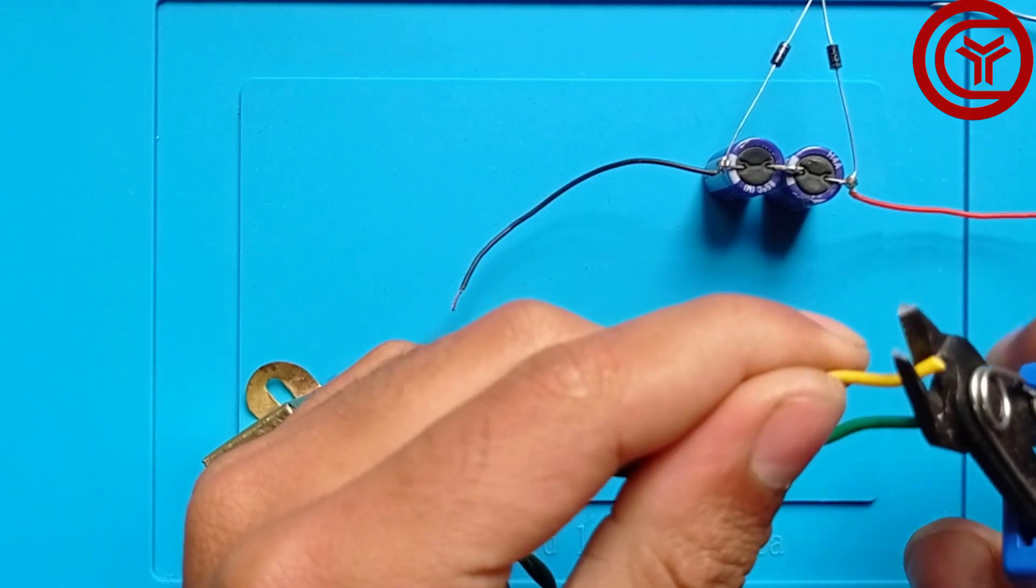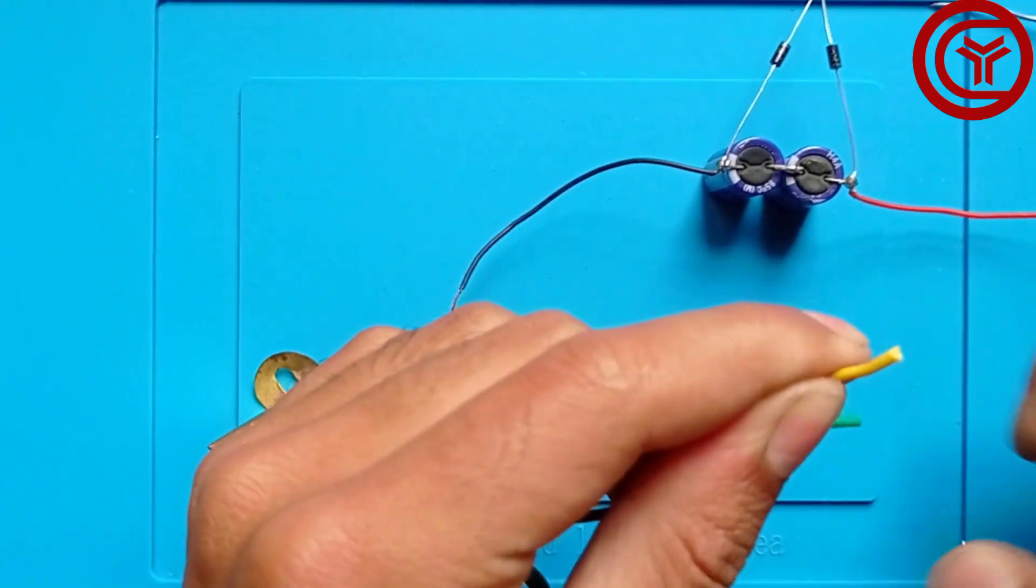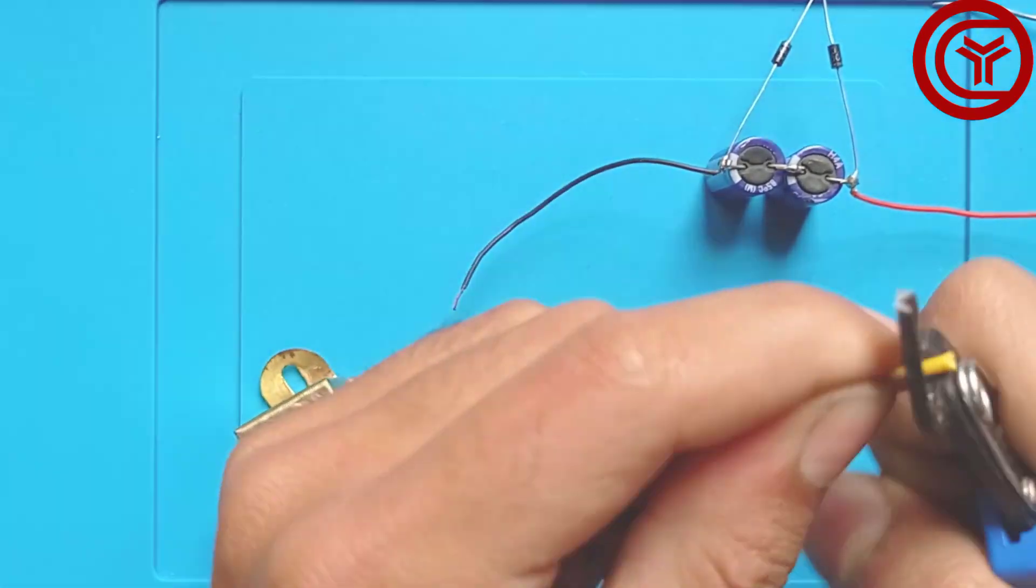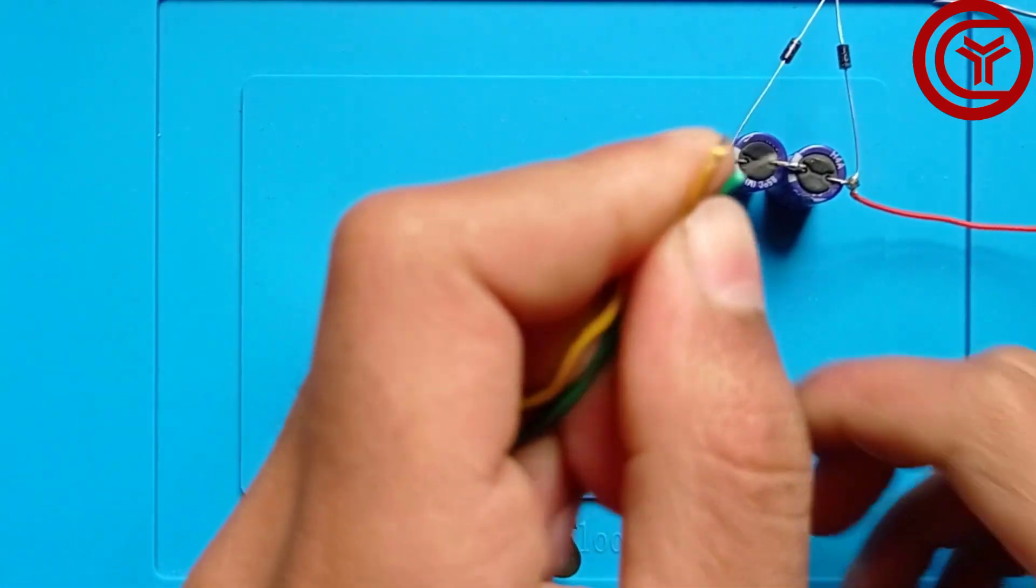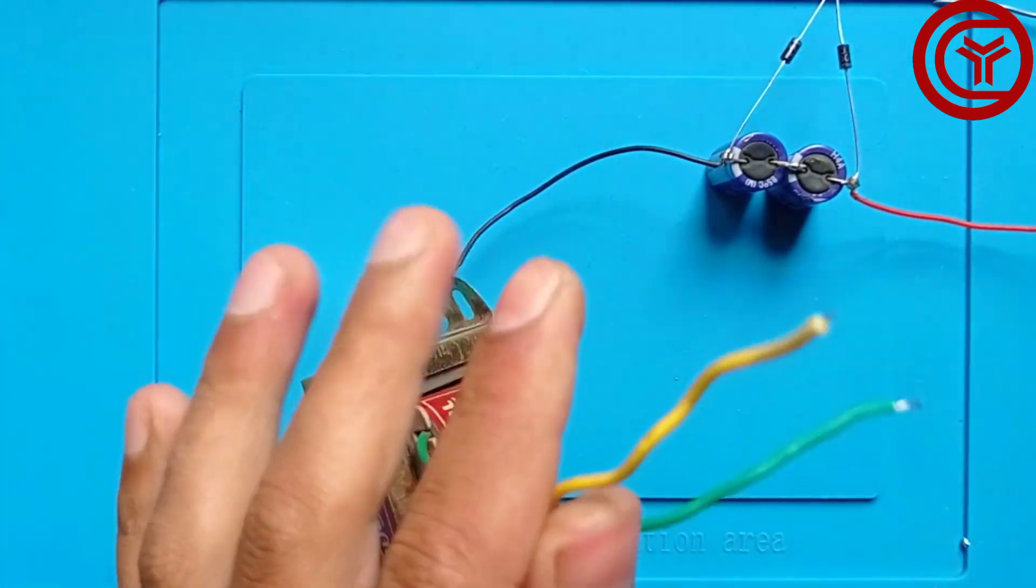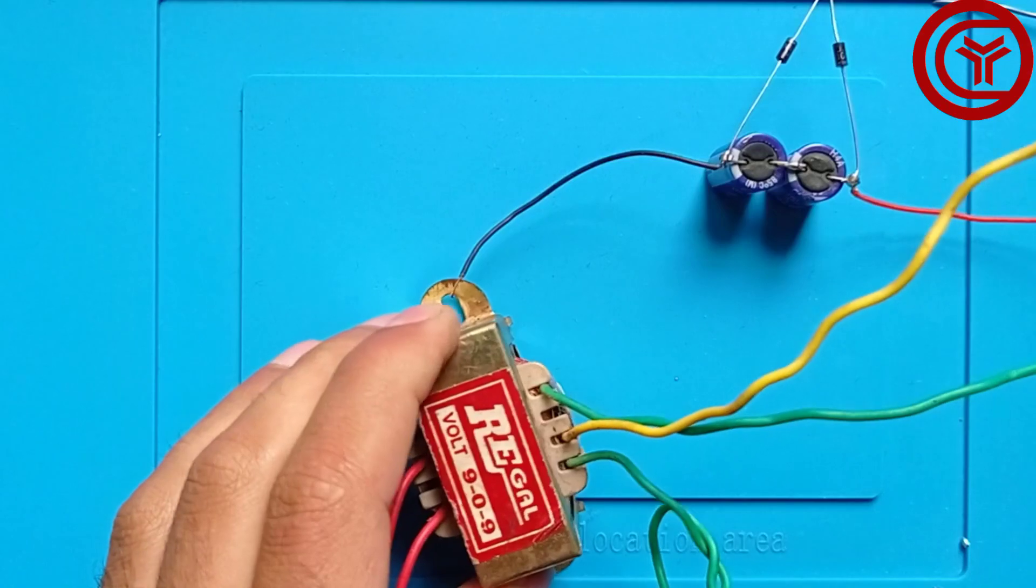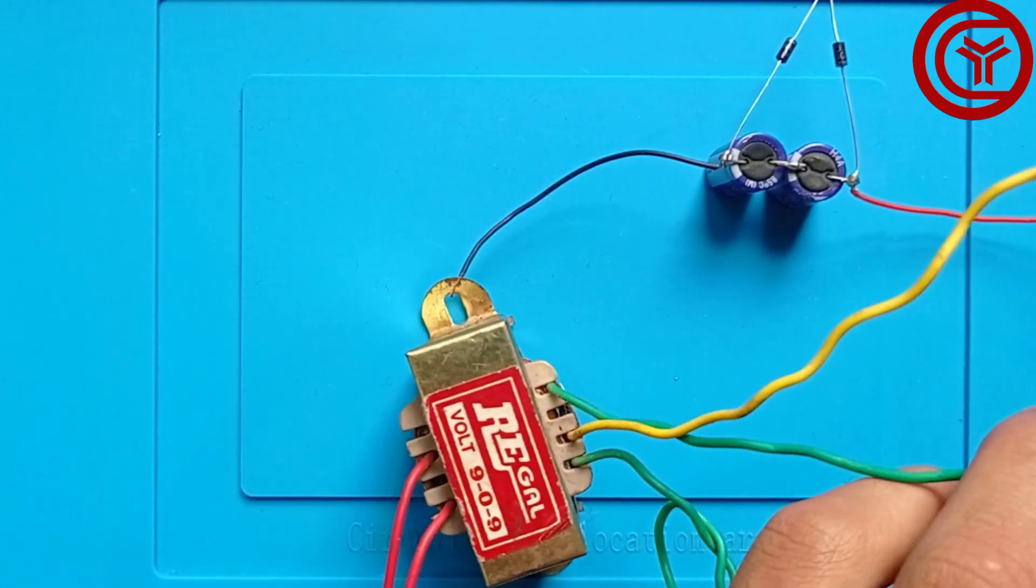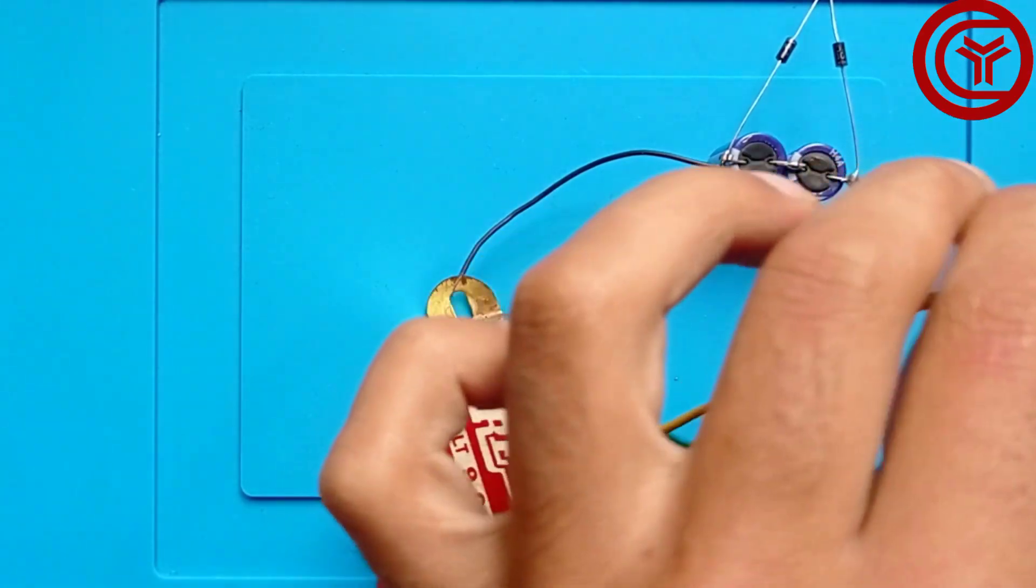Now we'll uncover the points of these wires. We've uncovered the wires and now we'll apply solder on them so we can solder these wires with the capacitors.